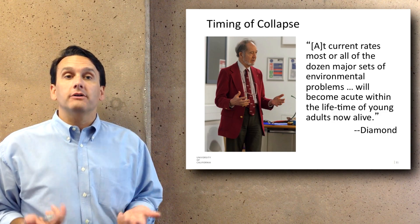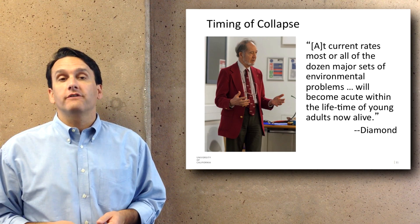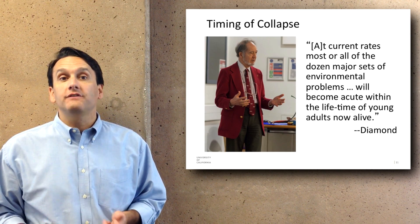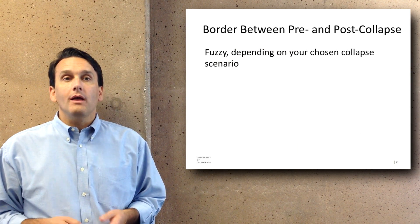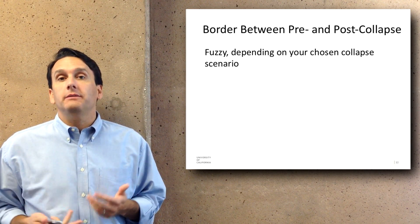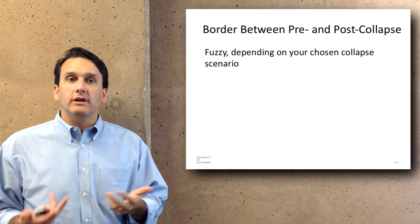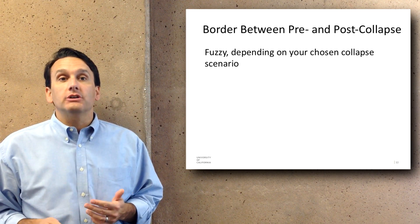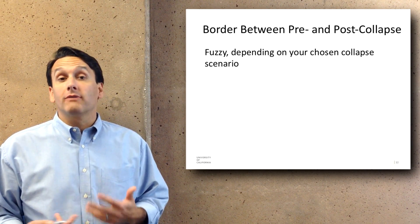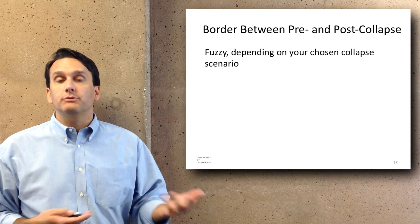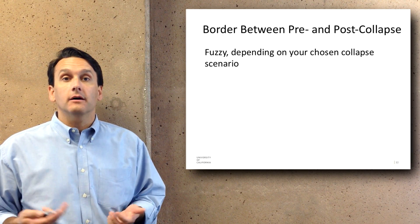In terms of the timing of collapse, Jared Diamond suggests that at current rates, most or all of the dozen major sets of environmental problems will become acute within the lifetime of young adults now alive — so about 50 or 60 years. The border between pre- and post-collapse, even though we can discuss it as a crisp differentiation, is actually a fuzzy distinction depending on your chosen collapse scenario. Currently, some people suggest we're already in the beginnings of collapse — that the recessions of the late 2000s are the first stages of a broader-scale collapse.